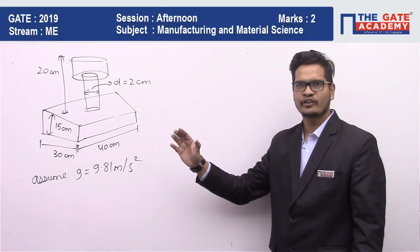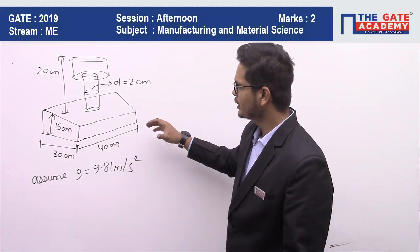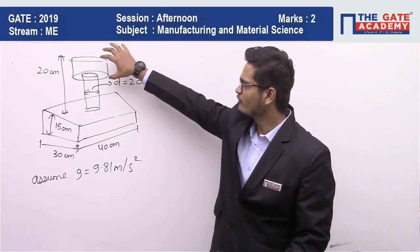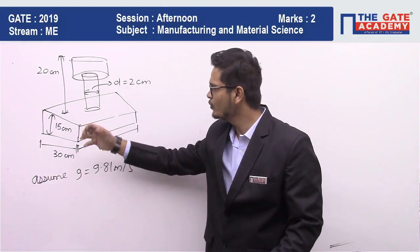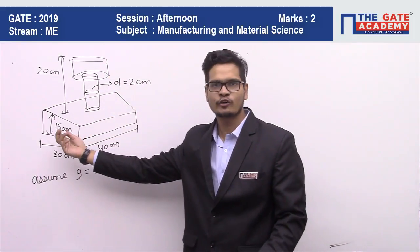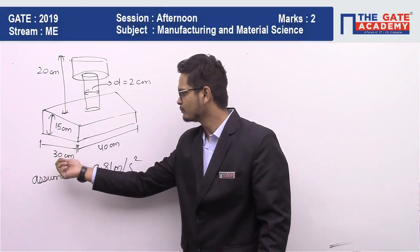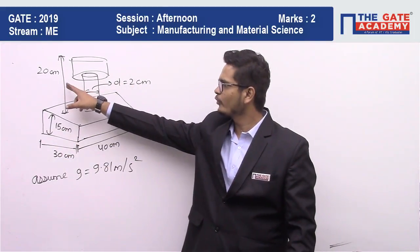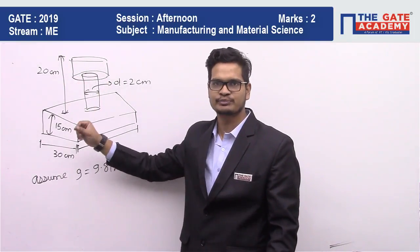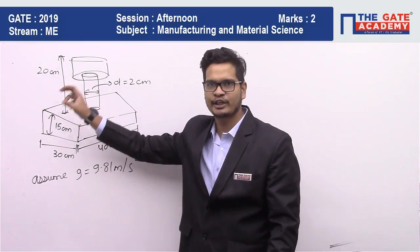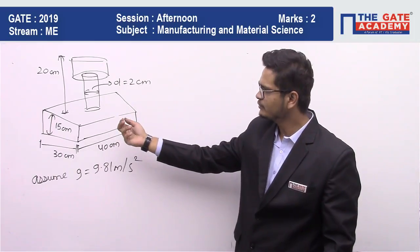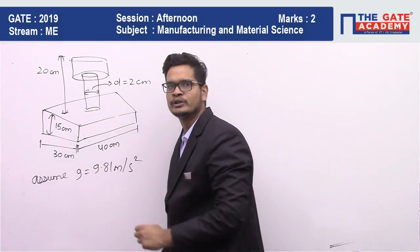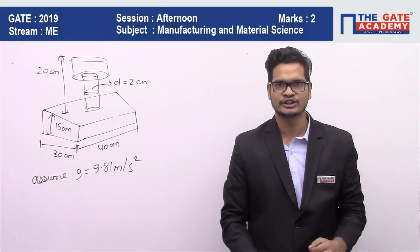In this question they have given us a diagram of a gating system and they are asking us to find the pouring time. Here we have a pouring basin, we have the sprue, and these are the cavity. The dimension of the cavity they have given us is 15 by 30 by 40. They have given in the question that the height of the molten metal is maintained as 20 centimeters. From the diagram we can see that the molten metal is entering the cavity at its top, so this makes it a top gating system.